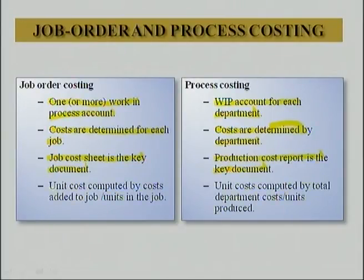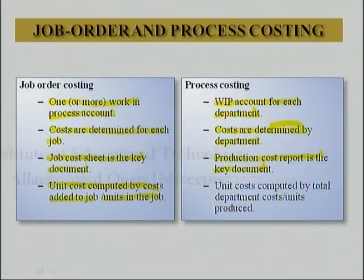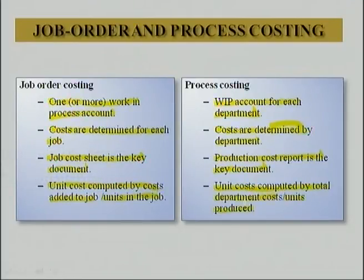In job order costing, unit cost is computed by dividing total cost accumulated for the job by the number of units in the job — to obtain the per unit cost. Whereas in process costing, unit cost is computed by dividing total department costs by units produced, giving you the per unit cost.